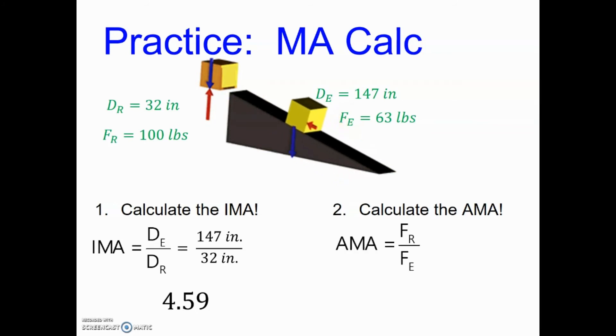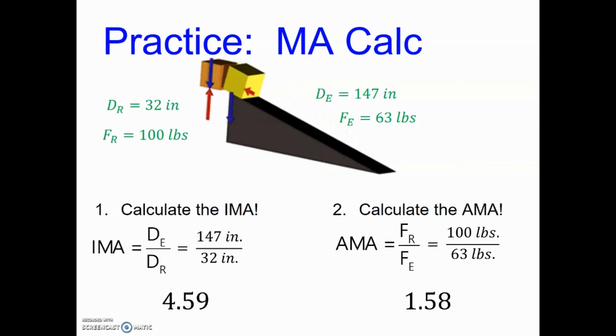So let's do the same thing for AMA. If we pull the calculations for that and we take the resistance force divided by the effort force I'm going to plop those numbers in there from the example above. I know that pounds are on top pounds are on bottom so they cancel each other out and I have an actual mechanical advantage of 1.58.